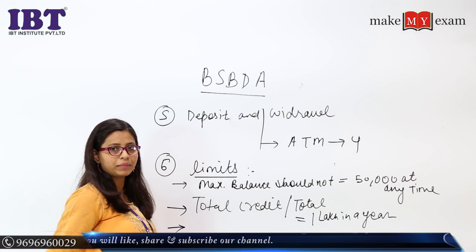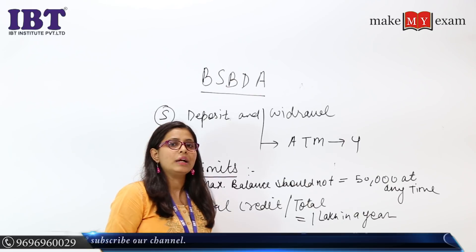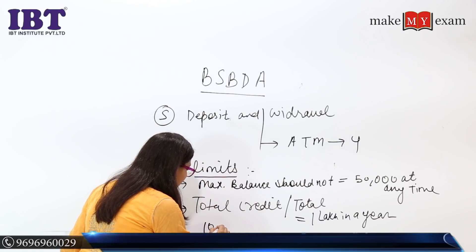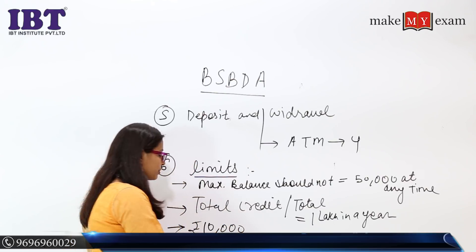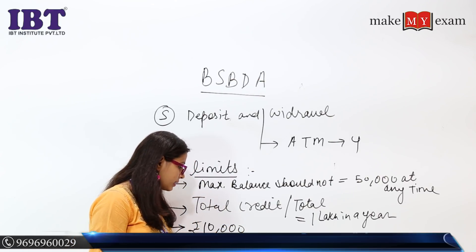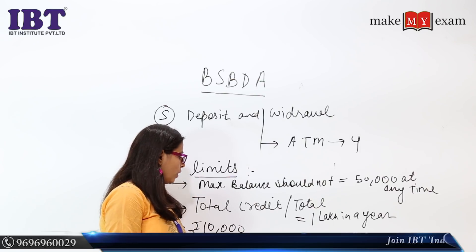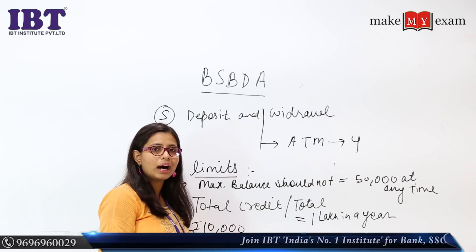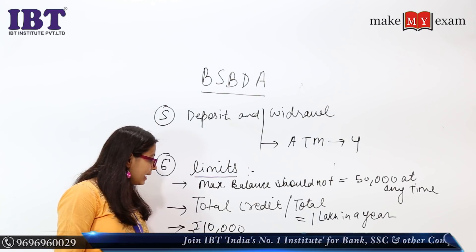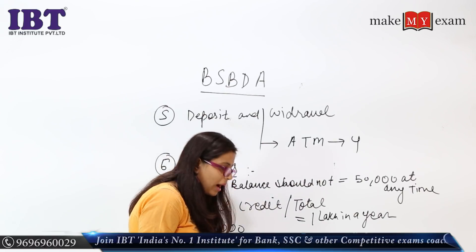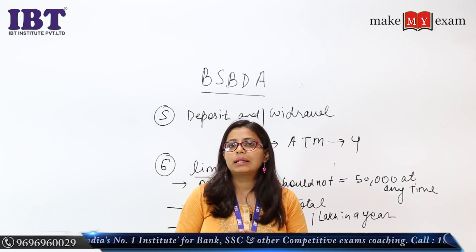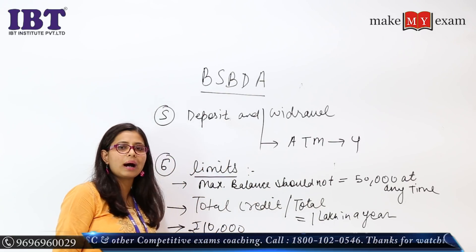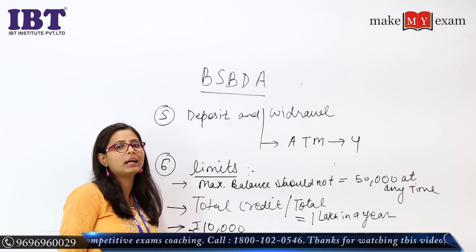Now let's talk about the debit limits. In terms of debit, you cannot transfer more than ₹10,000. Total debit by way of cash withdrawal or transaction should not exceed ₹10,000 in a month. Whether through cash or electronic transaction, it should not exceed ₹10,000 per month.